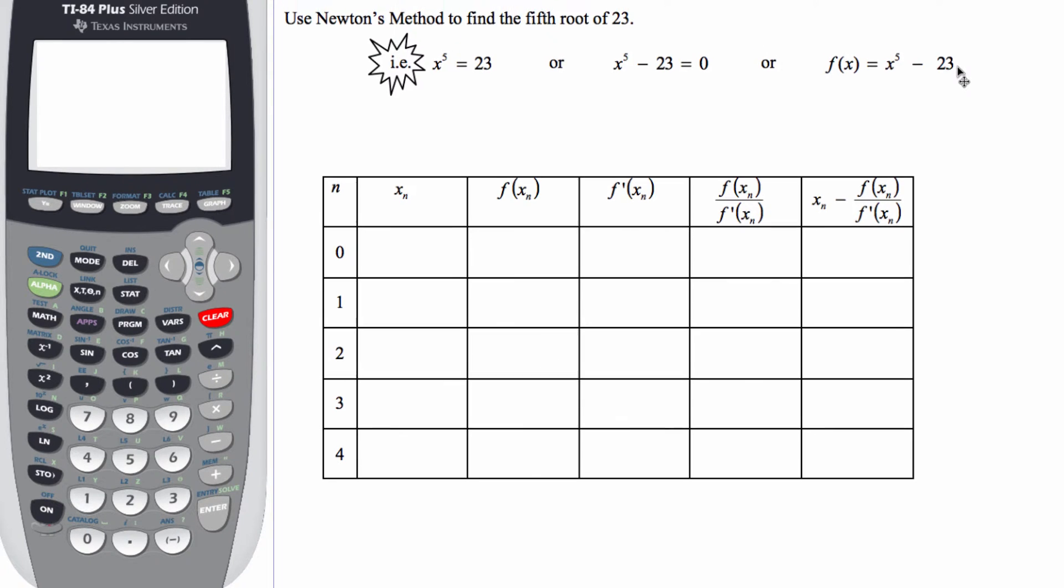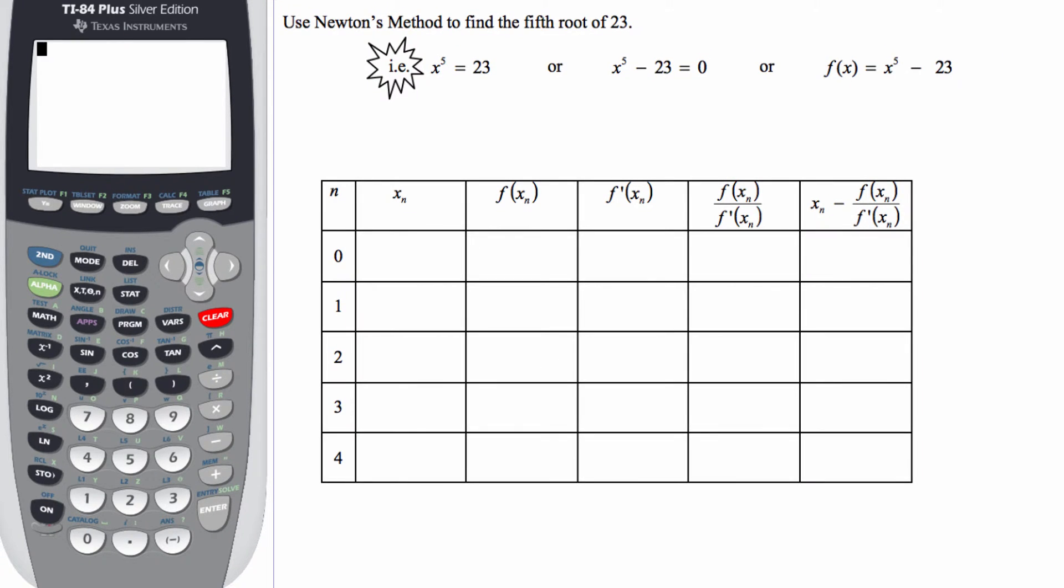Now, very often, you'll be presented with problems that are similar to this, where you'll be told, use Newton's method to find a fifth root of 23. So you can write this several different ways. But the one that we're going to focus on is going to be the last one, f(x) equals x to the fifth minus 23.